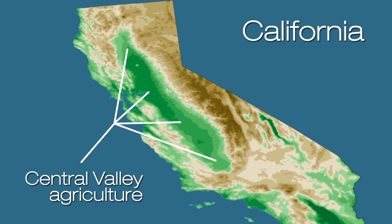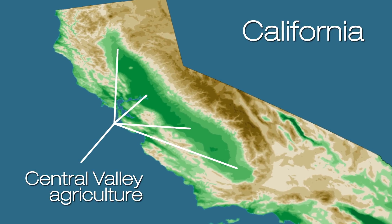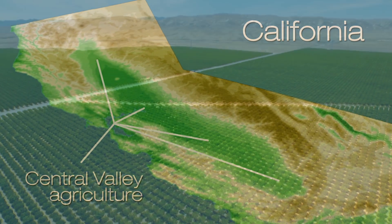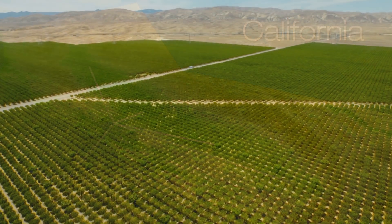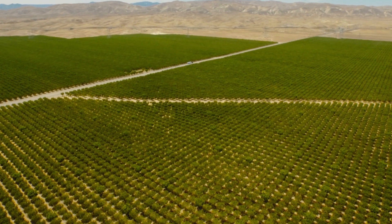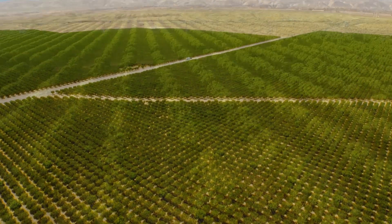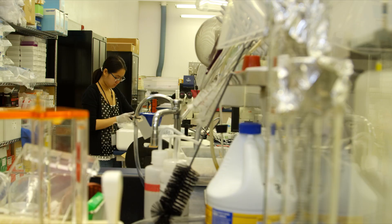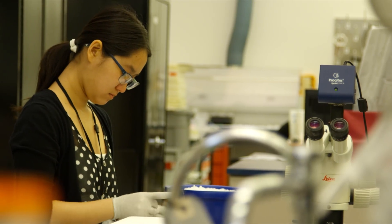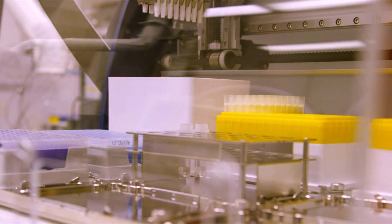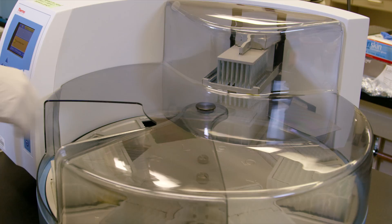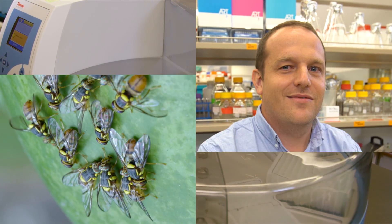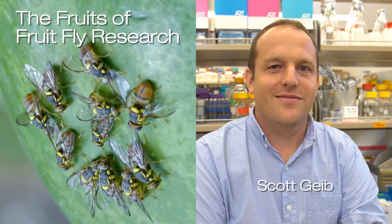The Central Valley of California is one of the largest fruit and vegetable growing regions in the nation. If tifritid fruit flies became established, the entire industry would be decimated. This work is a really good example of how foundational genomic resources can be used in applied science.